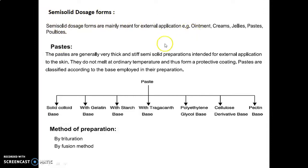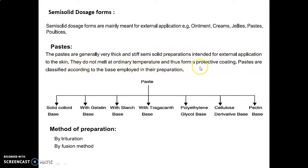Examples of semi-solid dosage forms include ointments, creams, jellies, pastes, and poultices. We will discuss pastes specifically. Pastes are generally very thick and stiff semi-solid preparations intended for external application to the skin. They do not melt at ordinary temperature and thus form a protective coating.